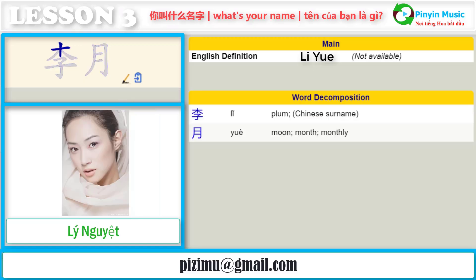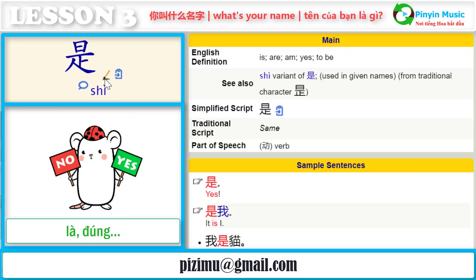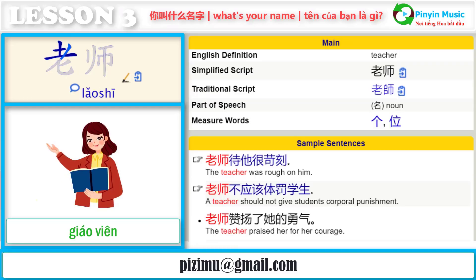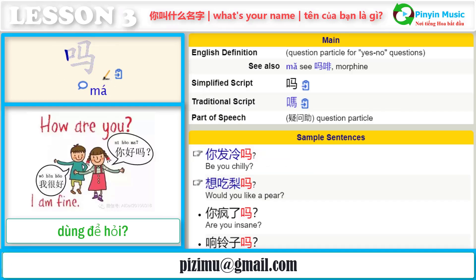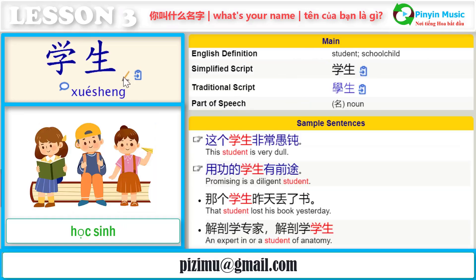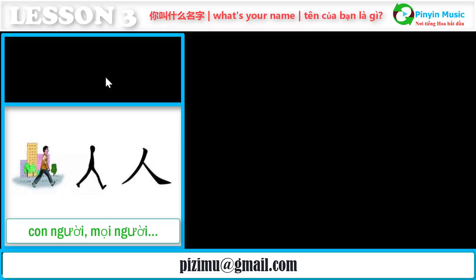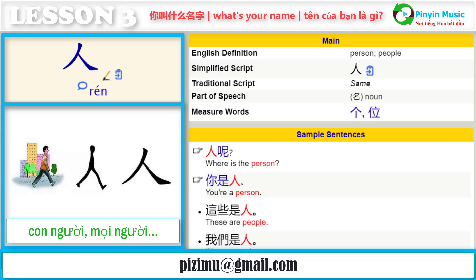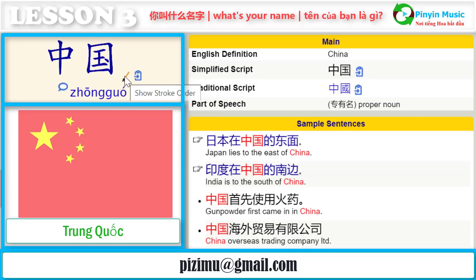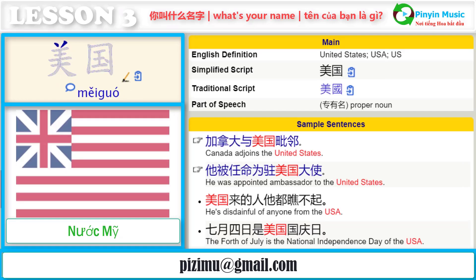Proper noun: 礼乐。是，老师，吗，学历。人。Proper nouns: 中国，美国。